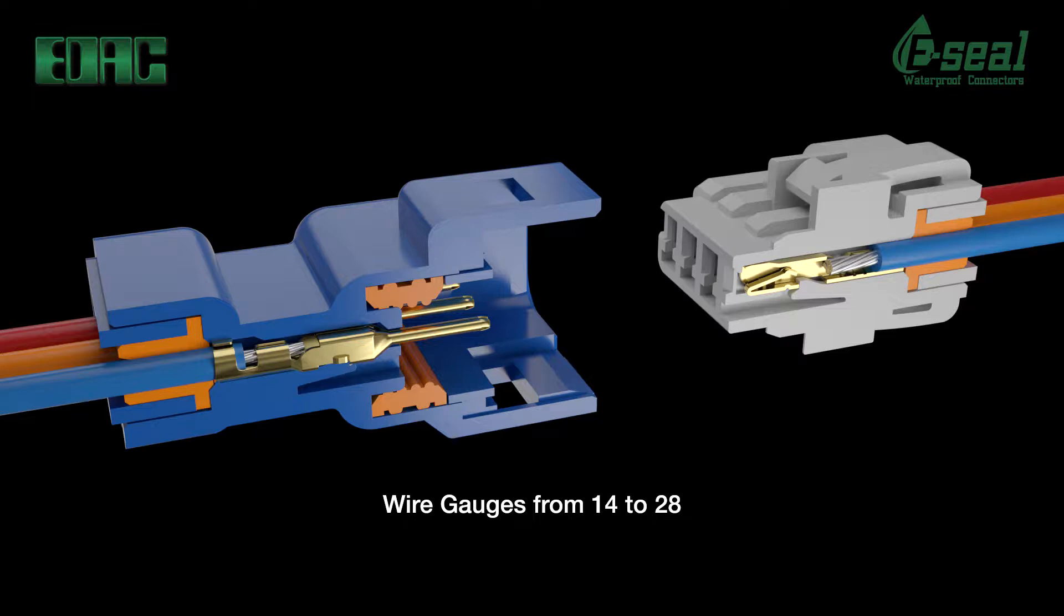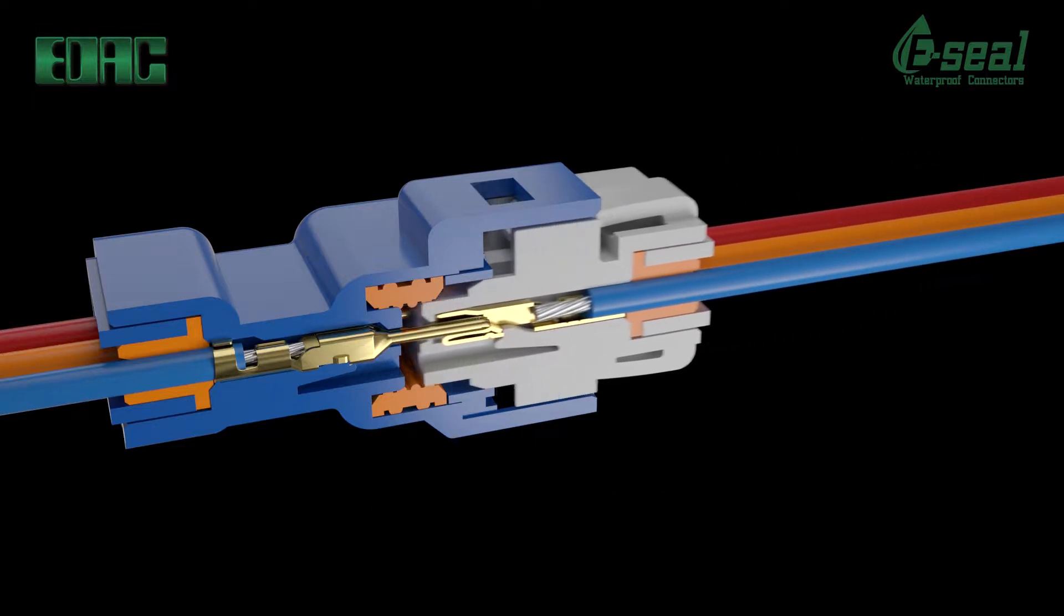Hand tools are available for crimping and applicator dies for high volume automated production. Internal polarizing feature prevents mismating of connectors.